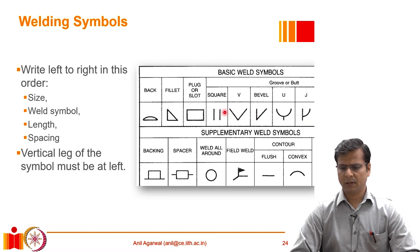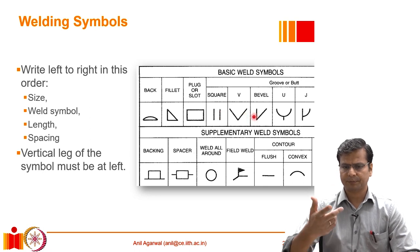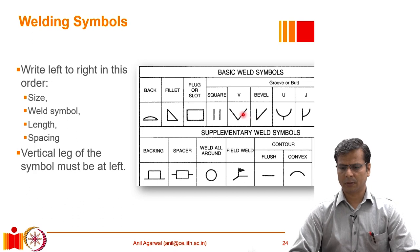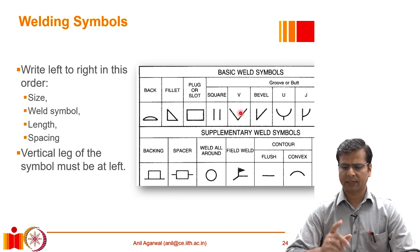If it is a double square, double V, or double bevel — meaning both faces of the plates are machined to create the groove — then the symbol is repeated on both sides of that line.